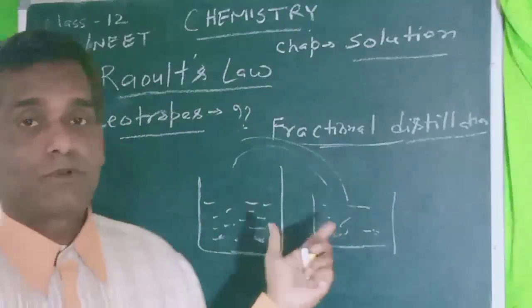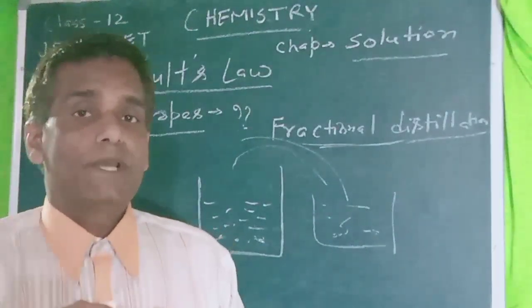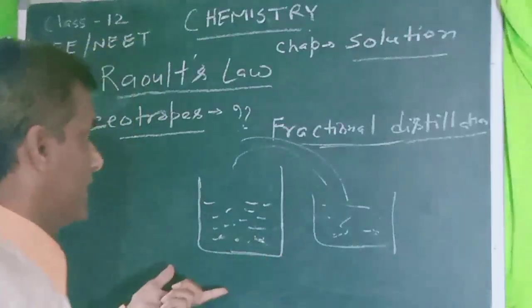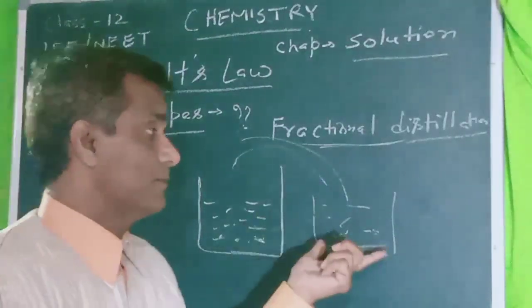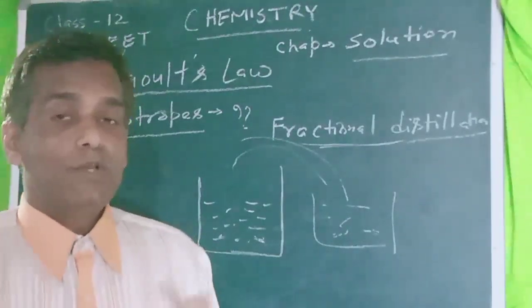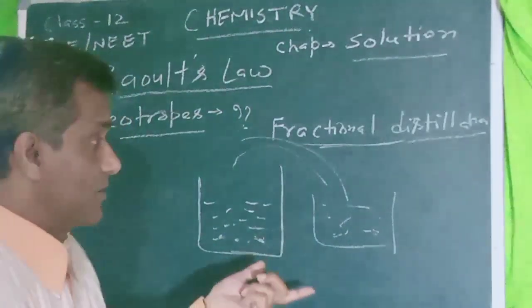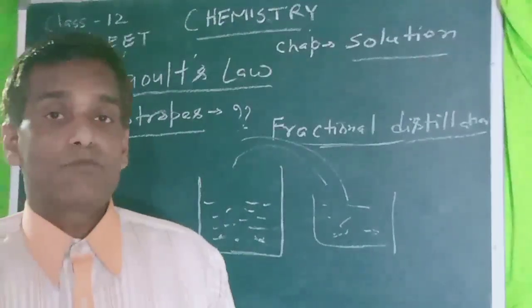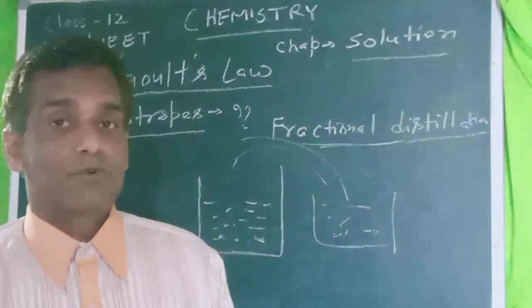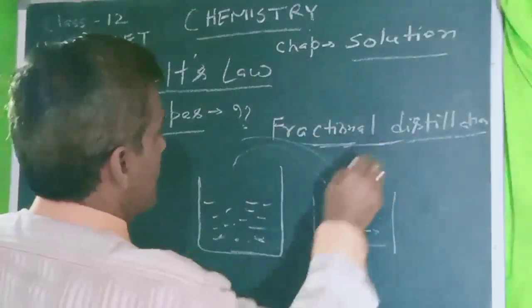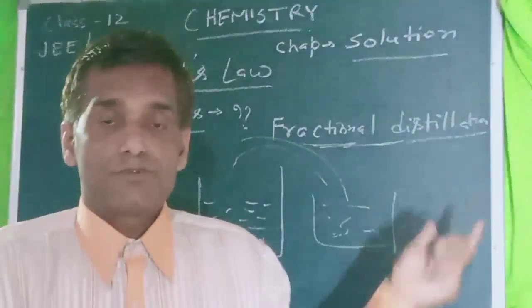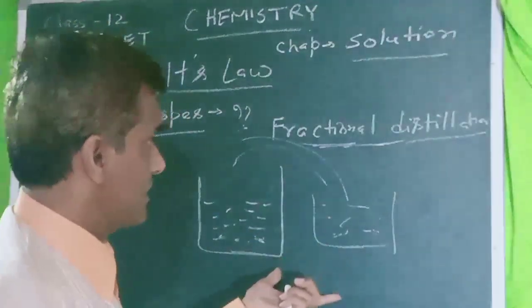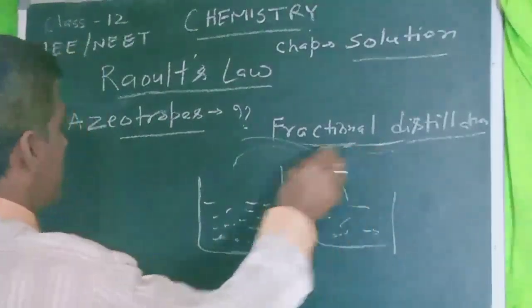Azeotropes involve two-liquid solutions where the boiling points are different. When we heat them up, the liquid with the lower boiling point is distilled first — this is the process of fractional distillation, where we separate the liquids. Understanding fractional distillation helps us understand the formation of azeotropes.